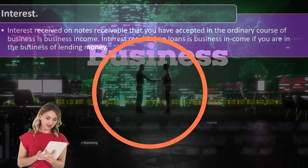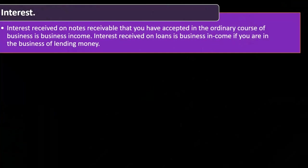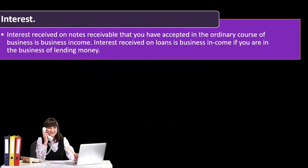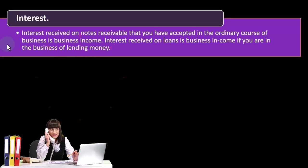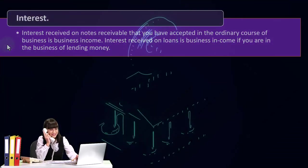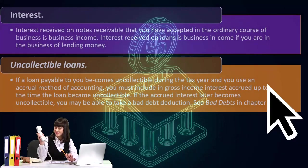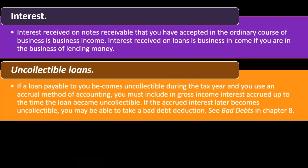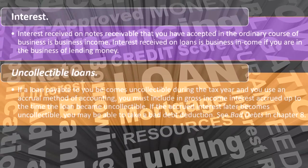You might have had accounts receivable or notes receivable and then charged interest on those receivables. That interest income isn't just passive income from having money in the bank — it's part of your business dealings with clients. Interest received on loans is also business income if you are in the business of lending money. Regarding uncollectible loans: if a loan payable to you becomes uncollectible during the tax year and you use an accrual method of accounting, you must include in gross income interest accrued up to the time the loan became uncollectible.